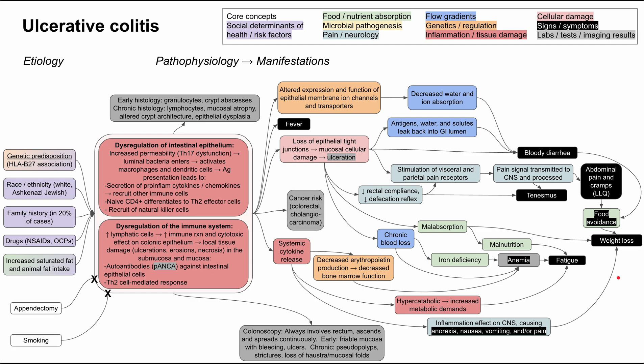There is a significant cancer risk in ulcerative colitis, predominantly colorectal cancer or cholangiocarcinoma. Because UC is a systemic problem, there can be extra-intestinal manifestations. In the skin: erythema nodosum, pyoderma gangrenosum, and aphthous stomatitis in the mouth. In the eyes: uveitis, episcleritis, and iritis. In the joints: osteoarthritis, ankylosing spondylitis, and sacroiliitis.